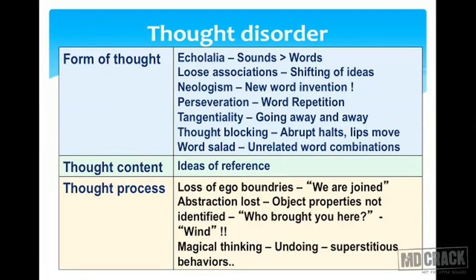These are all examples of form of thought disorder. The next category is thought content disorder, exemplified by ideas of reference — the patient feels everything happening in the world is being referred to them personally. For example, if it starts raining, the patient believes it is raining specifically because of them.